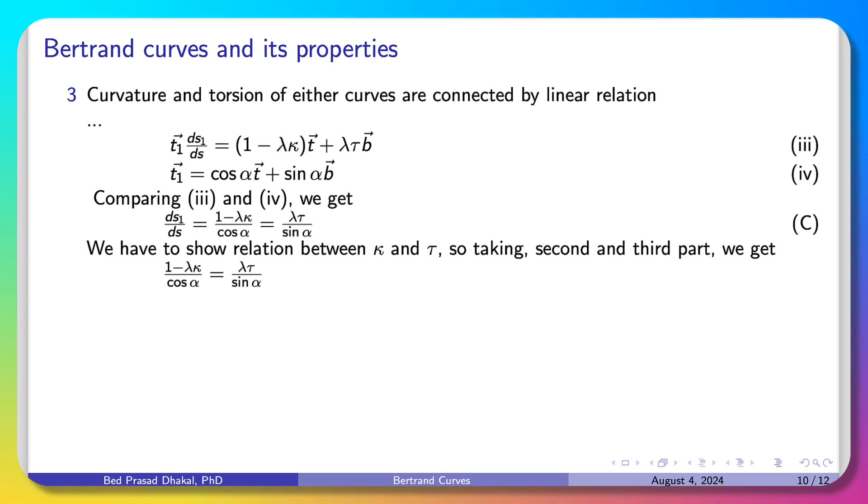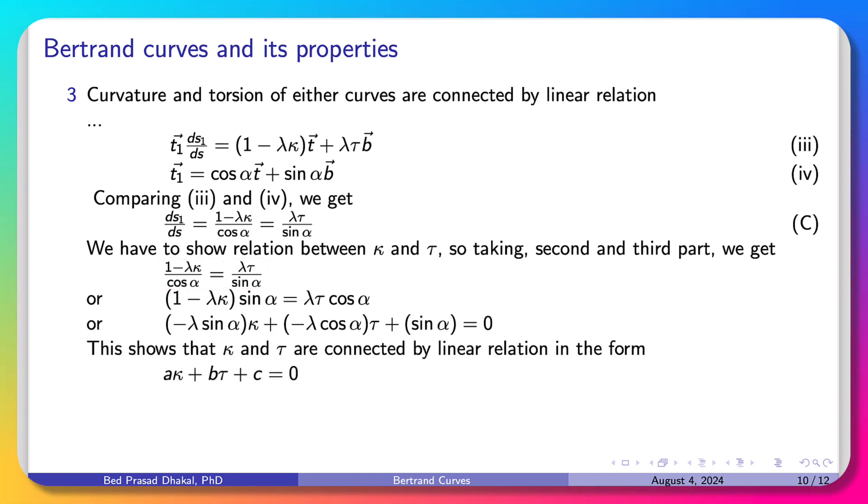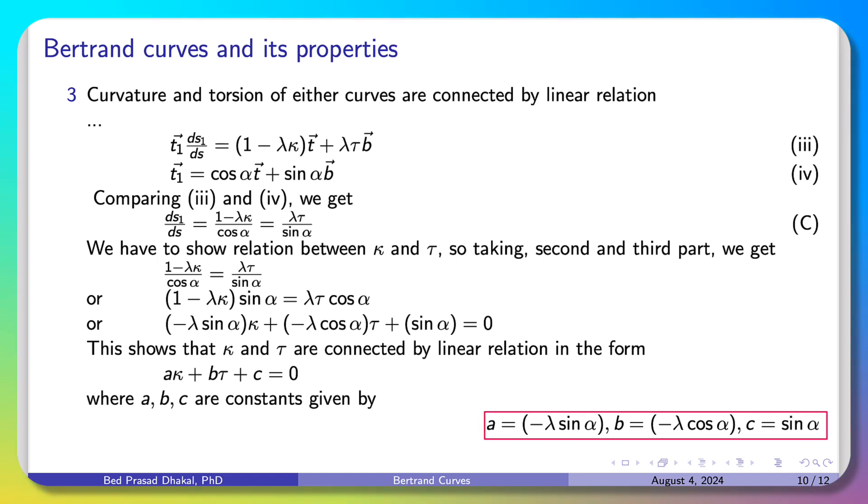Now, curvature and torsion relation. From equations 2 and 3, we get 1 minus λκ by cos α equal to λτ by sin α. Simplifying this, we get minus λ sin α times κ plus minus λ cos α times τ plus sin α equals 0. This is in the form a times κ plus b times τ plus c, where a equals minus λ sin α, b equals minus λ cos α, and c equals sin α. This shows κ and τ are linearly expressed.